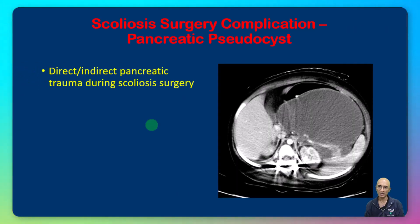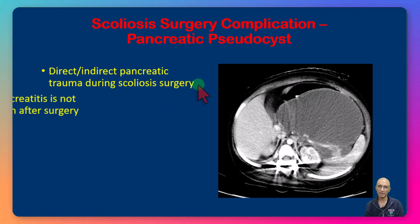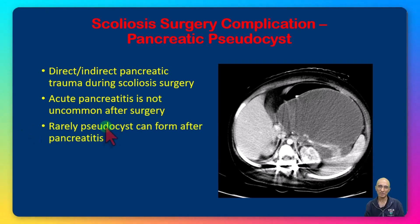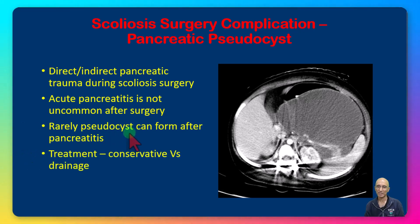To summarize: direct or indirect pancreatic trauma can occur during scoliosis surgery. Acute pancreatitis is not an uncommon complication following scoliosis surgery and can be seen in up to seven percent of patients. Rarely, pseudocyst can develop as a result of acute pancreatitis, and management can be either conservative or through surgical or endoscopic drainage.